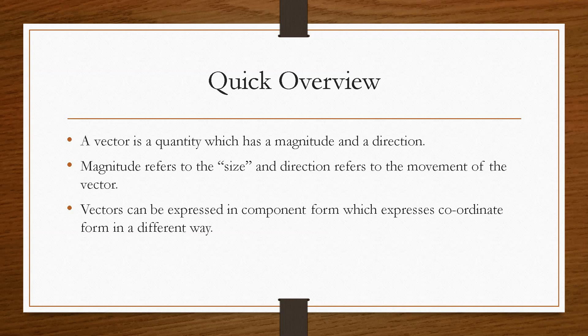Now vectors can be expressed in what's known as component form, which expresses the coordinates in a different way. For example we could have 3 and 4. Now that looks like a standard coordinate system. However, what we can also do is have it looking like this. We can stack them on top of each other. So these are both vector quantities.